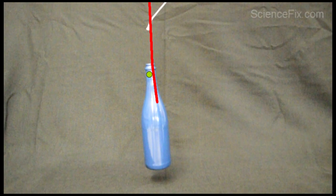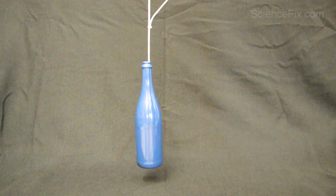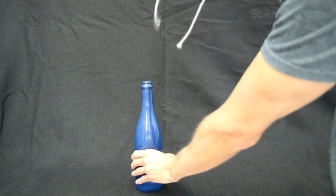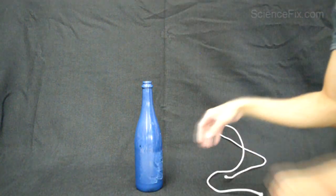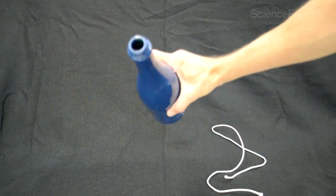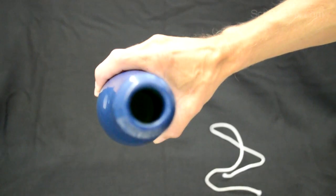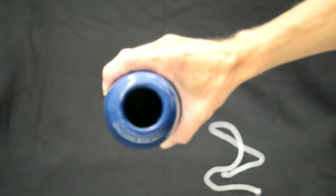A discrepant event is a demonstration where students observe some kind of phenomena happening and it contradicts what they think they know about how it works. Magic constantly does that. They think, well, rope can't hold that up, so it confronts their prior knowledge and they have to start digging deeper: what's really going on here? That's really the basis of a good science demo.